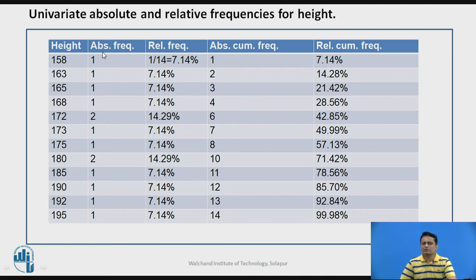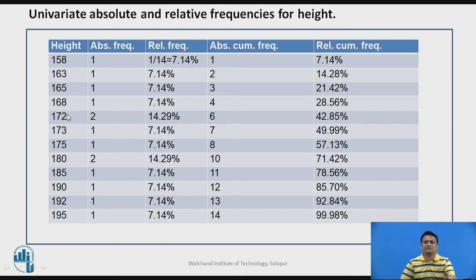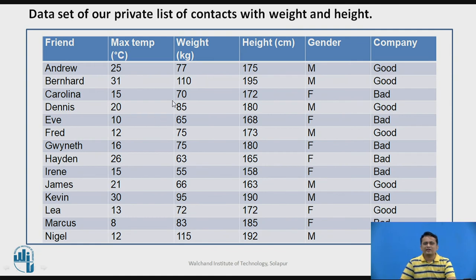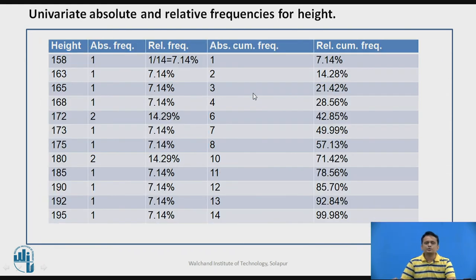For absolute frequency, look in the database and count how many persons have a given height. For height 158 cm, there is only one person, so the absolute frequency is 1. For height 172 cm, there are two persons — Carolina and Leah — so the absolute frequency is 2. Each unique height value is counted in the same way.